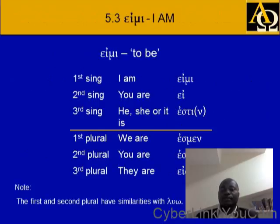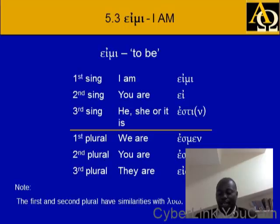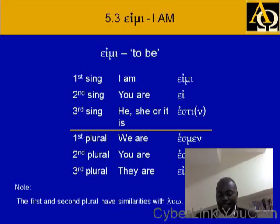Let's now look at eimi — eimi is I am, the verb to be. This is how it conjugates: eimi is I am; ei, you are; estin, he or she, it is; esmen, we are; este, you are; eisin, they are.